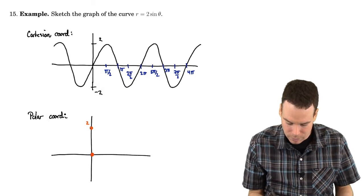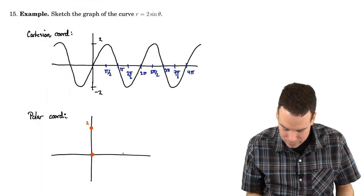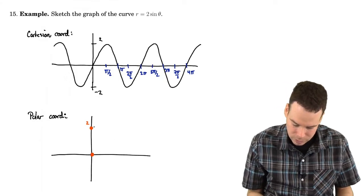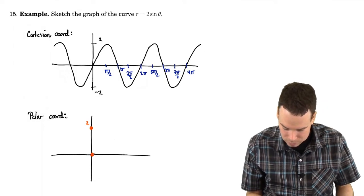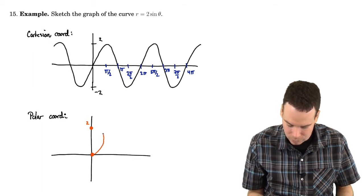But in order to get from there to there, I have to sweep out different angles. So as my angles increase to pi by 2, my r value increases. So it looks something like this. My r value, I'm getting farther and farther away from the pole.